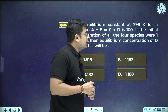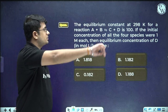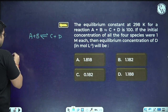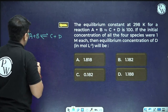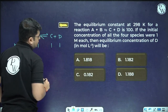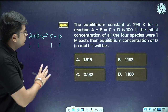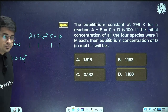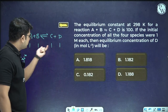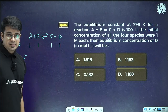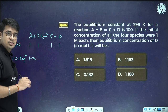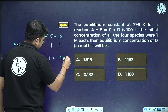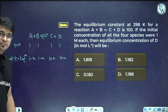Question: The equilibrium constant at 298 K for A + B ⇌ C + D is 100. Initial concentrations of all four species are 1 M. At equilibrium, let x moles convert: concentrations of A and B become (1−x) and concentrations of C and D become (1+x). We can now use Kc = [C][D]/[A][B] to solve for equilibrium concentration of D.